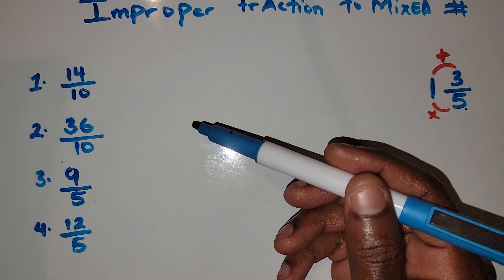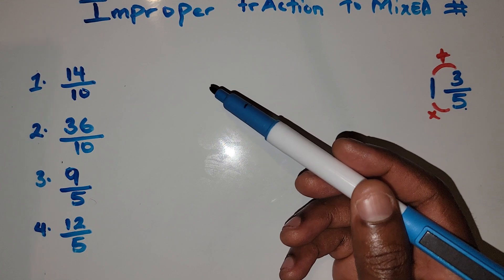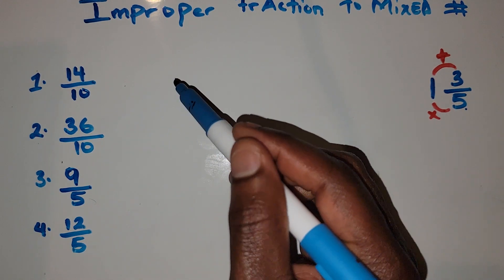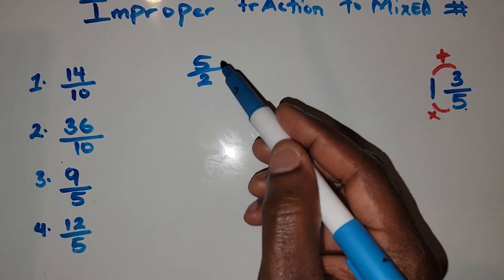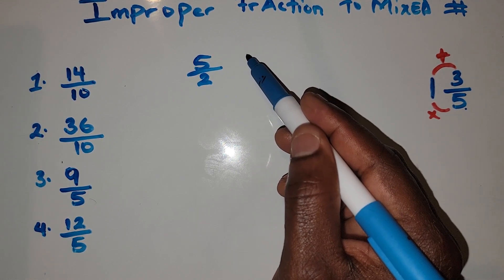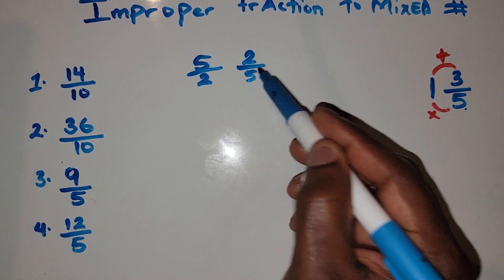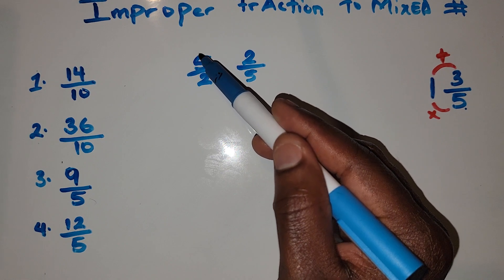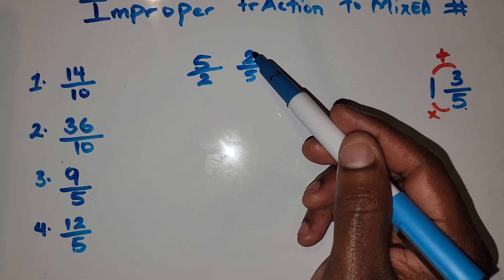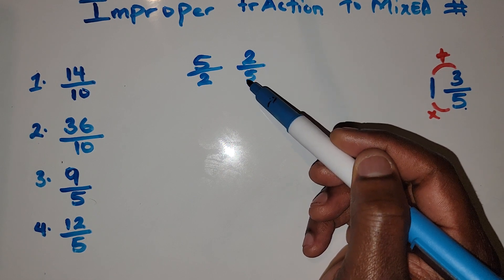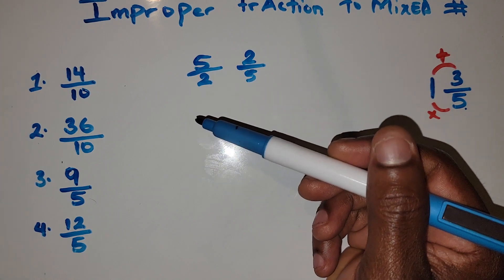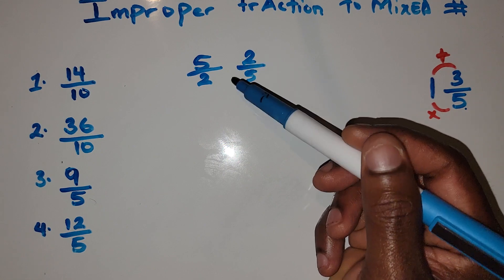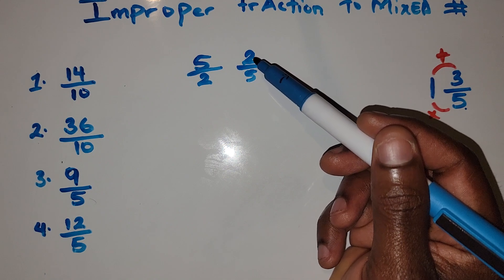First of all, what is an improper fraction? An improper fraction is any fraction where the numerator is greater than the denominator. For example, 5 over 2 is an improper fraction, while 2 over 5 is a proper fraction. The numerator is greater than the denominator in an improper fraction, while in a proper fraction the numerator is less than the denominator.